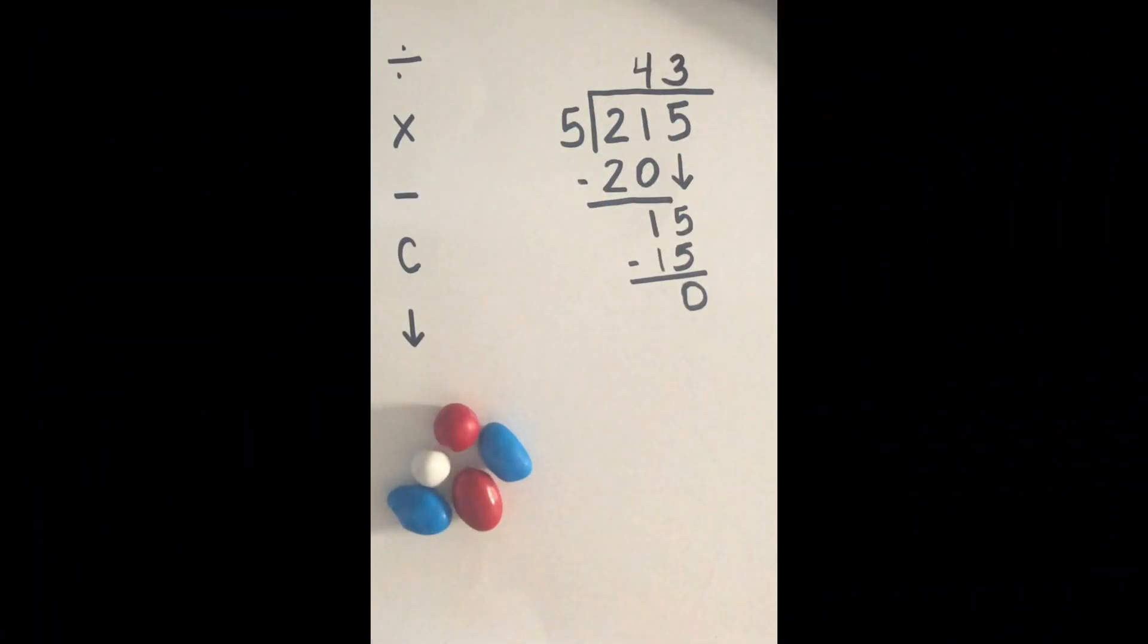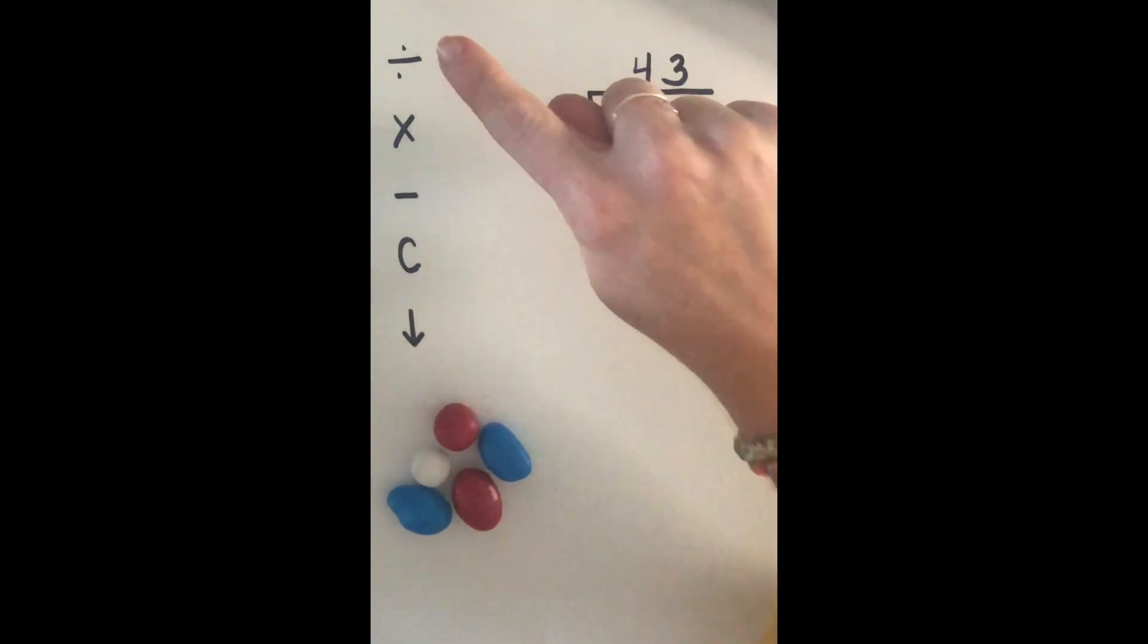Let's look at this problem here that I've already solved for us using these five steps: divide, multiply, subtract, compare, bring down. So first I look at the first two numbers.